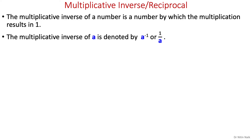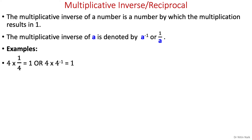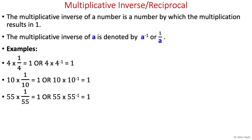First we look at what is multiplicative inverse and then modular multiplicative inverse. The multiplicative inverse of a number is a number when multiplied by the original number gives the product 1. The multiplicative inverse of a is denoted by a to the power minus 1 or 1 over a. For example, the multiplicative inverse of 4 is 1/4, of 10 is 1/10, and of 55 is 1/55, because each product gives value 1.